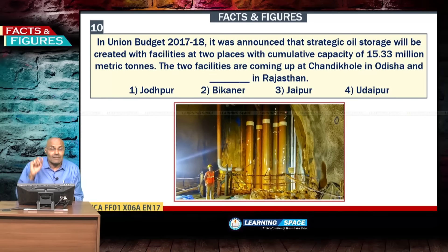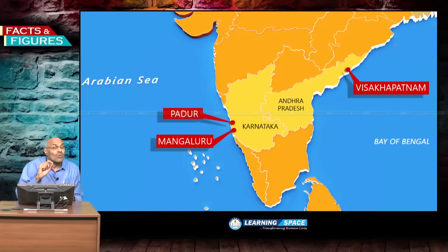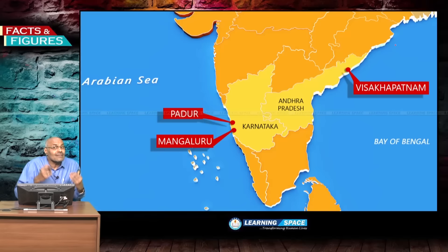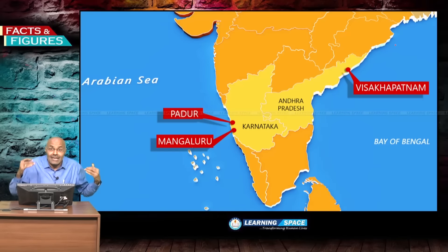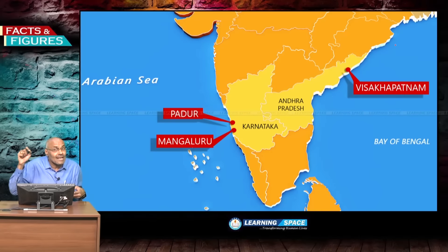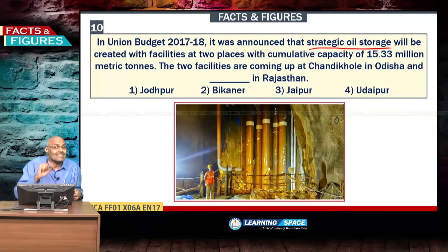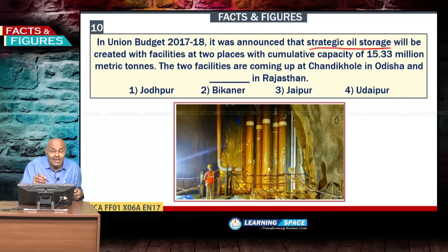In Union Budget 2017-18, it was announced that strategic oil storage in caverns will be expanded. Currently there are three underground storage facilities at Visakhapatnam (Andhra Pradesh), Mangaluru, and Padur (Karnataka). Two more facilities will come up at Chandikol in Odisha and Bikaner in Rajasthan, to maintain strategic petroleum reserves covering around 10–15 days of fuel requirements.